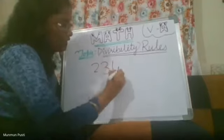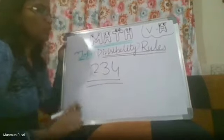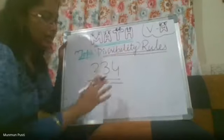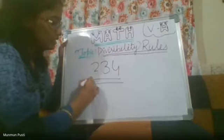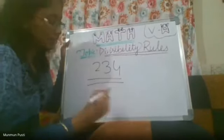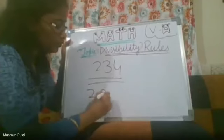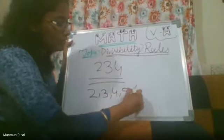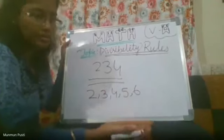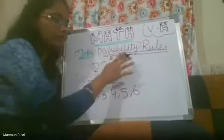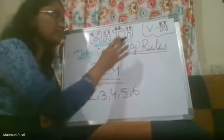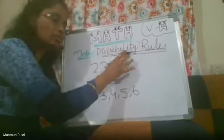For example, if a number like 232 is given to me, using divisibility rules I can easily find out which number it is divisible by — whether it is divisible by 2, 3, 4, 5, 6, or another number. We are not going to do the actual division; using these divisibility rules we can simply find out that answer.